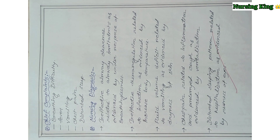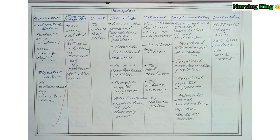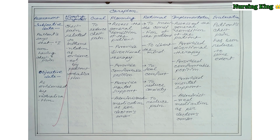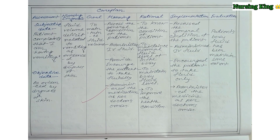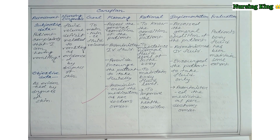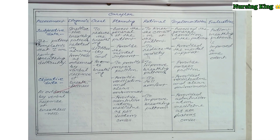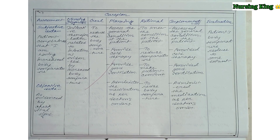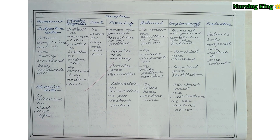After that comes the chief complaint and nursing diagnosis. According to the condition, you have to mention the chief complaint and nursing diagnosis. For each nursing diagnosis, you have to write one nursing care plan — a maximum of four nursing care plans.